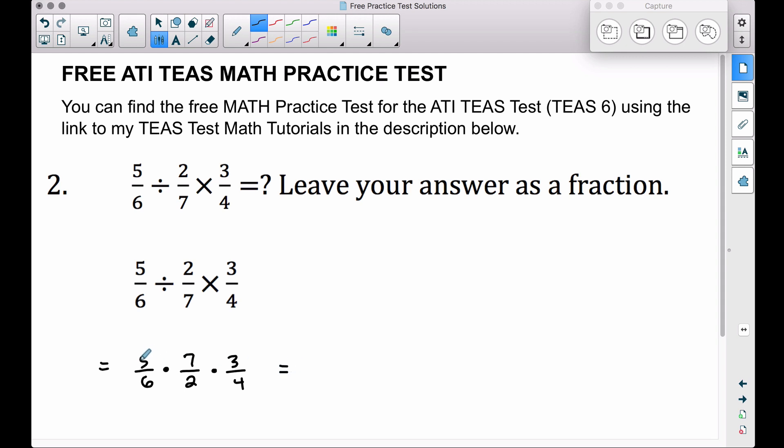Now from here you can just go ahead and multiply all of your top numbers together. So 5 times 7, that's 35. 35 times 3, that's going to be 105.